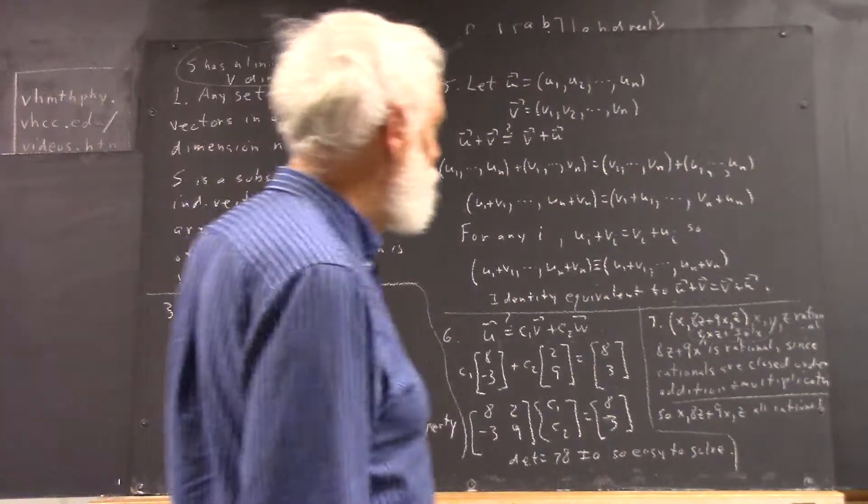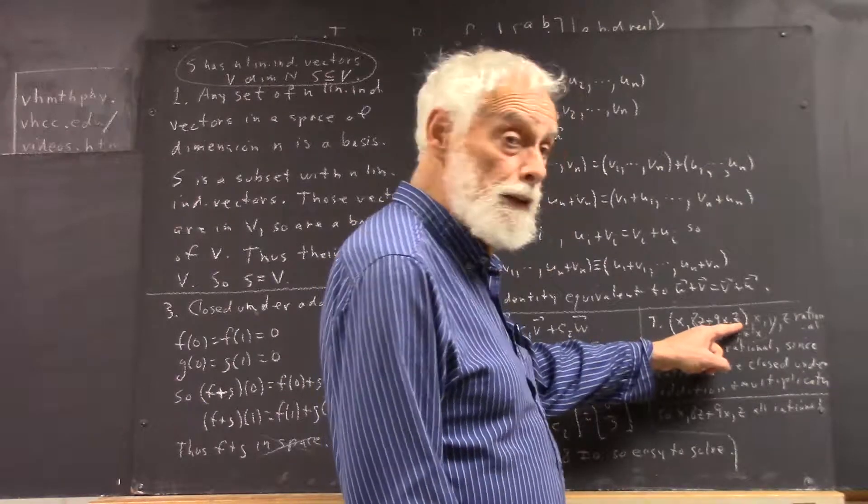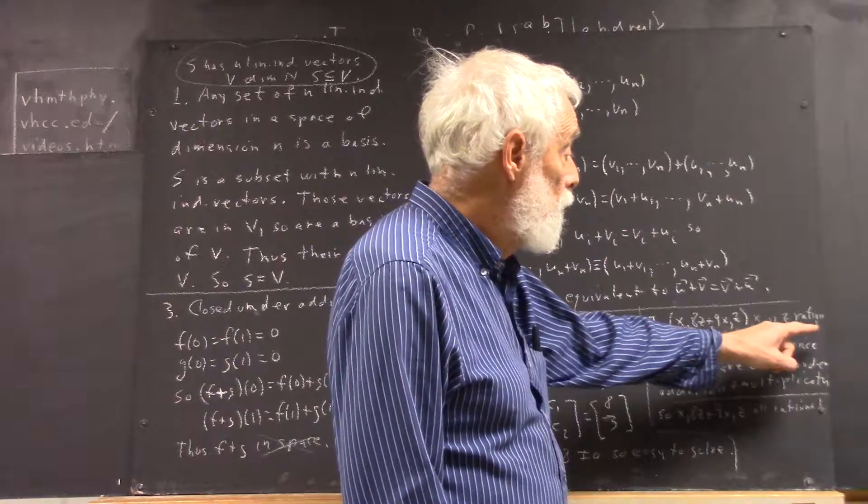On number 7, we're given vectors of the form x, 8z plus 9x, z, where x, y, and z are rational.